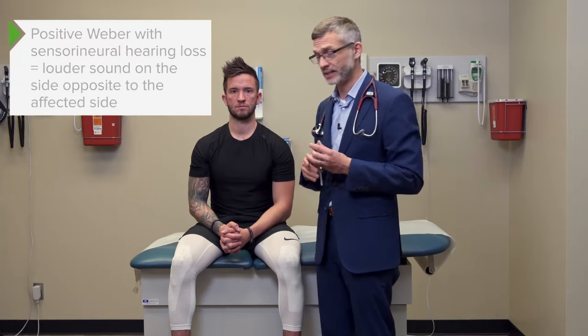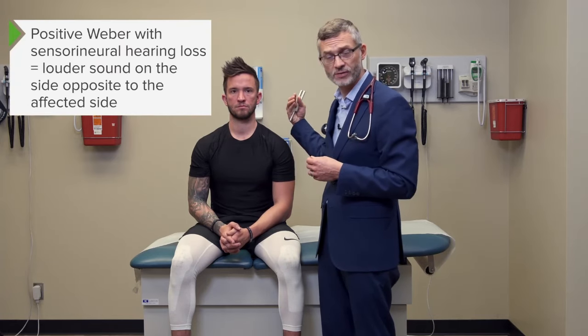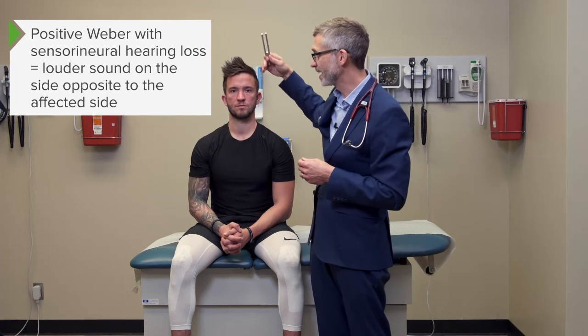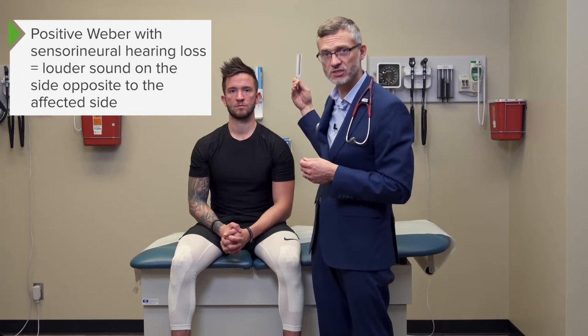In contrast, if he had a sensorineural problem on the left — where the nerve was out, perhaps due to a schwannoma or viral labyrinthitis causing damage to the nerve itself — then when I put the fork on his forehead, he would lateralize to the right, because the left sensory input is not functioning. This test alone doesn't tell us the cause of the problem, because you need to do the next step: the Rinne exam.